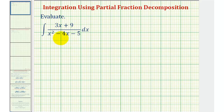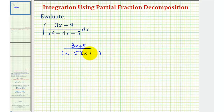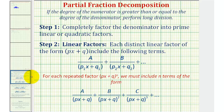The first step will be to factor the denominator. So we'll have the quantity three x plus nine divided by two binomial factors, where we have x and x. The factors of negative five that add to negative four would be negative five and positive one. And because we have two distinct linear factors, our partial fractions will be in the form of a constant A divided by the first linear factor plus a constant B divided by the second linear factor.